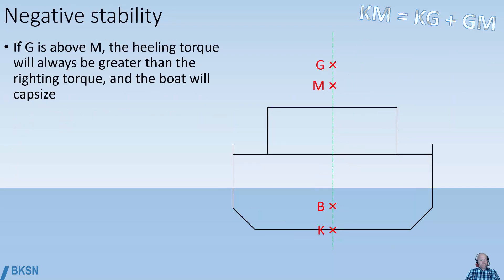Negative stability, on the other hand, means that the center of gravity is above the metacenter. Then the heeling torque will always be greater than the righting torque, and the boat will, in most cases, capsize.